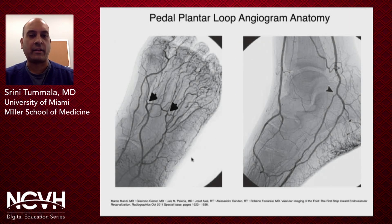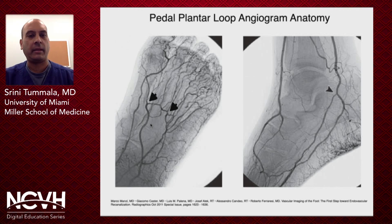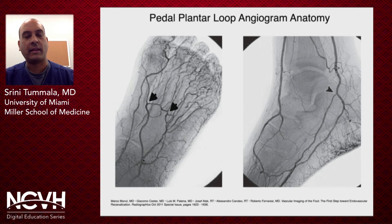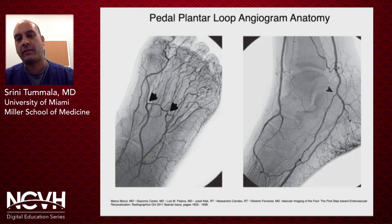Here are a couple of angiograms from a normal patient who had really no abnormality in their pedal plantar loop. You can see at the base of the first and second metatarsal, here's the dorsalis pedis artery making its first turn into the deep perforating artery, and then near the base of the third or fourth, it's making its next turn into the lateral plantar artery. With an optimized lateral foot x-ray with the base of the fifth metatarsal, drawing a line through the base of the metatarsals should intersect the base of the fifth to open up the bifurcation of the common plantar artery.